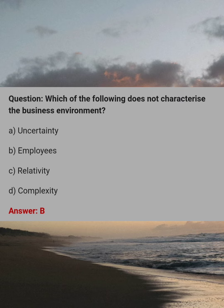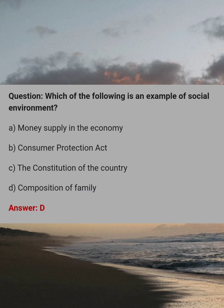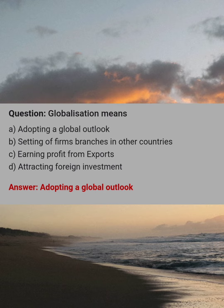Which of the following does not characterize the business environment? Answer: B, employees. Which of the following best indicates the importance of business environment? Answer: D, all of them. Which of the following is an example of social environment? Answer: D, composition of family. Globalization means? Answer: A, adopting a global outlook.